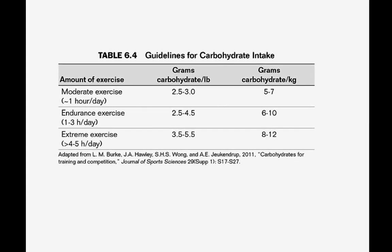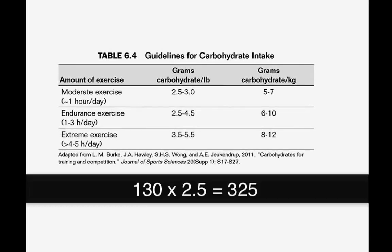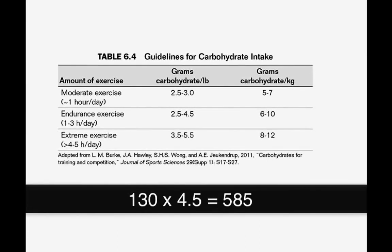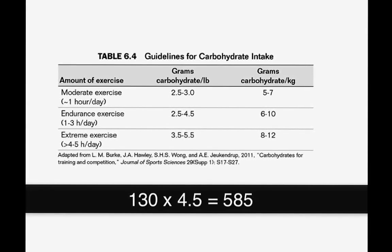What about a 130-pound triathlete? You would multiply 130 times 2.5 for the lower end to get 325 grams of carbohydrate a day. What would be the upper range? If you got 585 grams, you are correct. 130 pounds times 4.5 grams equals 585 grams.